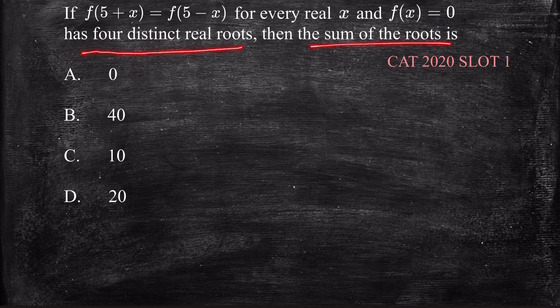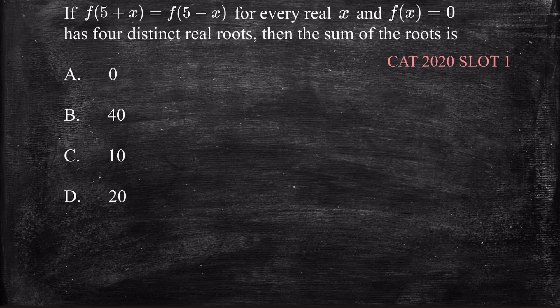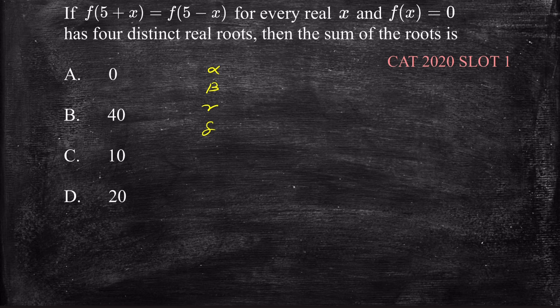So suppose we have four distinct roots alpha, beta, gamma, and delta. Then if we assume that alpha is equal to 5 plus K and beta is 5 plus L, where K and L are constant values.